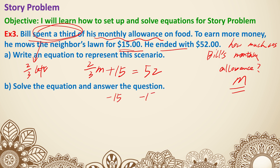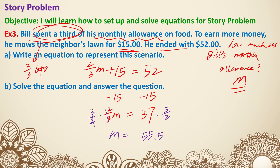Subtract 15 on both sides to get two thirds M equals 37. To eliminate the two thirds, multiply both sides by the reciprocal, which is three halves. That cancels the two thirds, giving M equals 55.5. Since we don't use fractions with money, we keep the decimal — his monthly allowance is $55.50. That's example three.